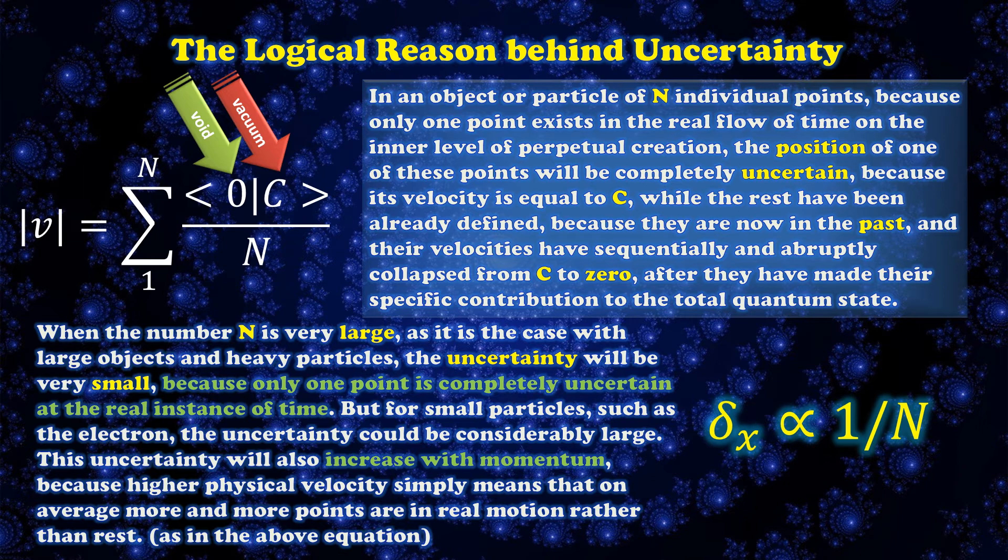Therefore, in an object or particle of n individual points, because only one point exists in the real flow of time on the inner level of perpetual creation, the position of one of these points will be completely uncertain because its velocity is equal to c, while the rest have been already defined because they are now in the past, and their velocities have sequentially and abruptly collapsed from c to zero after they have made their specific contribution to the total quantum state.